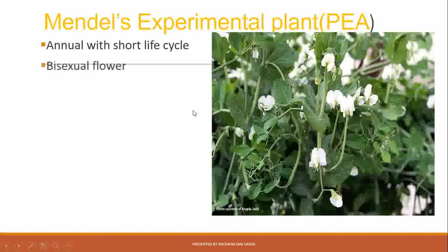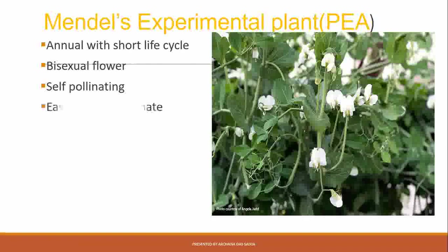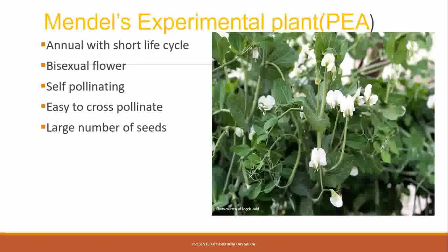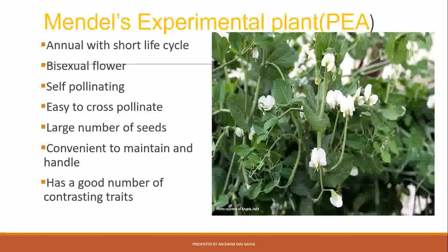The flowers of pea plants are bisexual — both male and female parts are present in the same plant, so they are self-pollinating. Cross-pollination can also be carried out artificially. They produce a large number of seeds, resulting in a large number of plants. They are convenient to maintain, handle, and grow, and are easily available. Most importantly, they have a good number of contrasting traits.